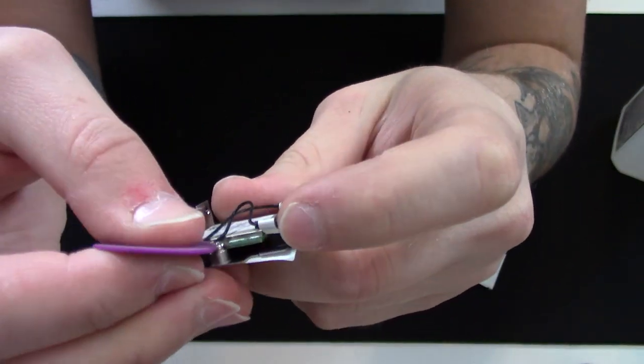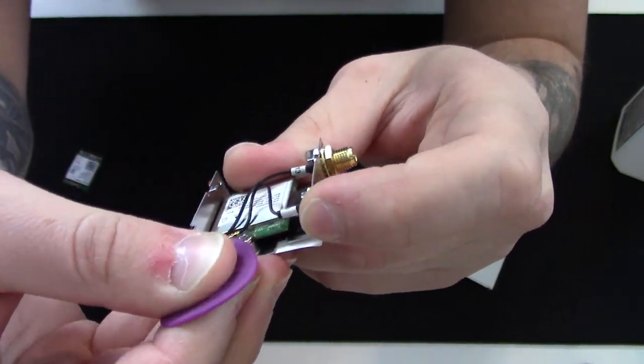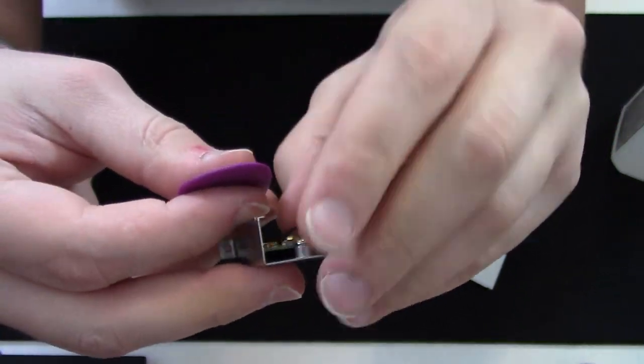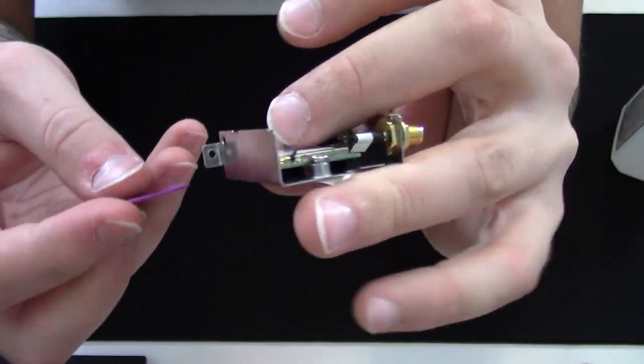Now you will need to disconnect the Wi-Fi antennas from the PCB. These can be easily damaged, so I suggest using a plastic spudger or guitar pick, as I did here.